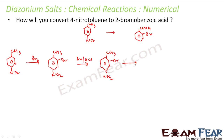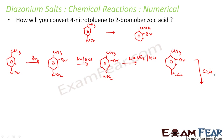Once it is NH2, I can convert this to a diazonium salt. To convert to diazonium salt, you react with NaNO2 and HCl. What you get is N2⁺Cl⁻. Now I can reduce this with ethanol (C2H5OH) or H3PO2. What will happen is N2Cl will go off and be replaced with hydrogen, so we get hydrogen here.